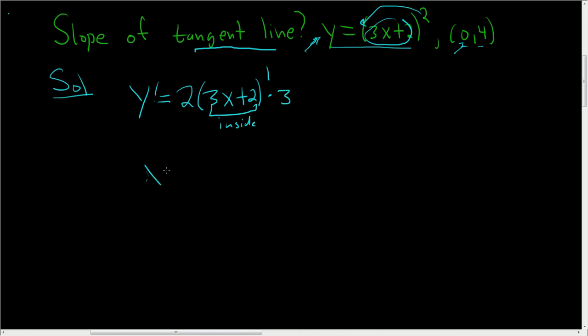This ends up being y prime. Let me write it as y'(x). This will be 6 times (3x+2). I'm not going to bother simplifying because the question just wants the slope. So let's just go ahead and finish.